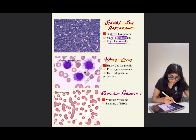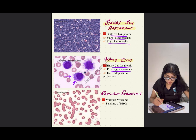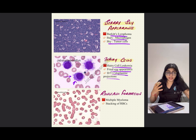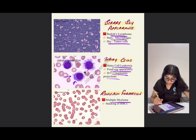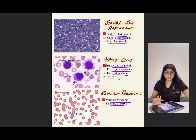Hairy cells literally look like they have hair on them and are seen in hairy cell leukemia. Also known as fried egg appearance, this is due to cytoplasmic projections outside the plasma membrane. Rouleaux formation is seen in multiple myeloma — it is the stacking of RBCs that looks like coins stacked upon each other, hence the name rouleaux formation.